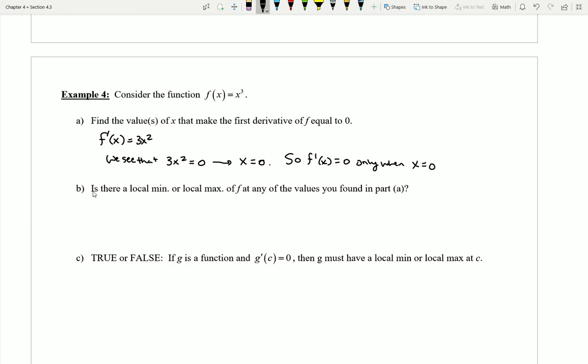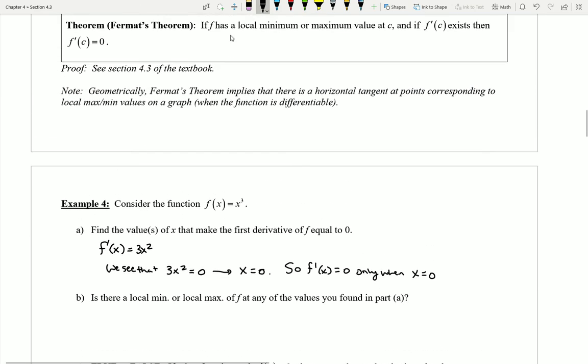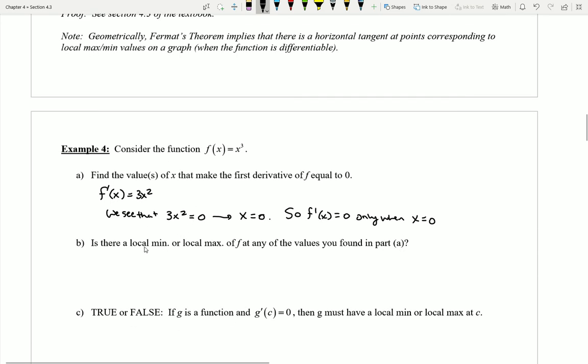Now Part B comes into play. If I think about what Fermat's theorem said, it said if there's a local minimum or maximum at a point, and if the derivative exists, then it must be equal to zero. So the question that I have is: is there a local min or local max of our function at any of the values that we found in Part A? That is, at zero, is there a min or a max?